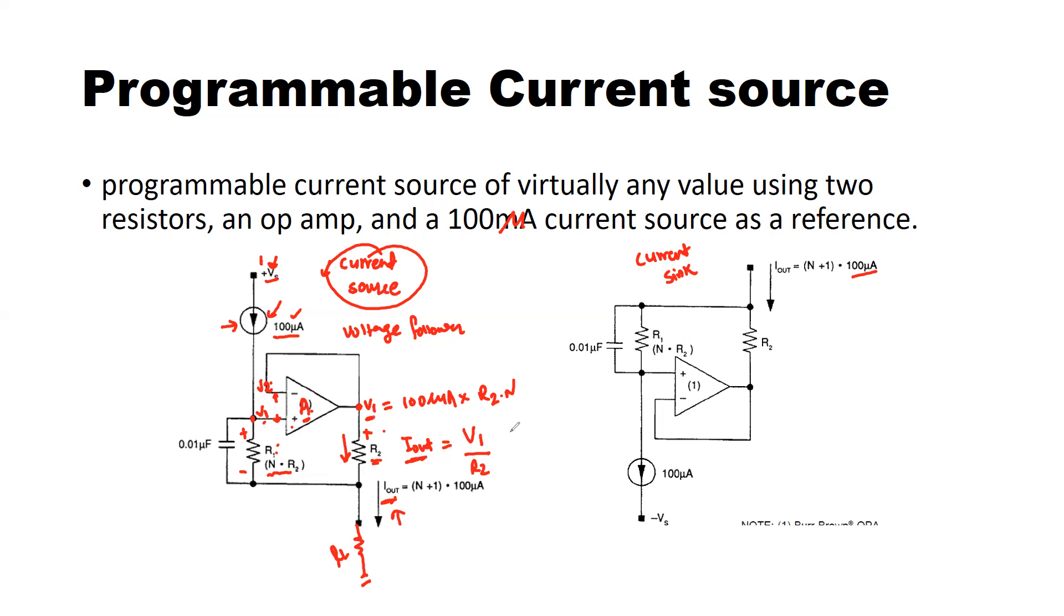You can see that it is 100 microampere multiplied by R2 times N divided by R2. R2 gets cancelled so it is 100 microampere multiplied by N. Why it is written N plus 1 here? Just write your views in the comment section. That's the multiple of 100 microampere you have been able to produce as a current source.